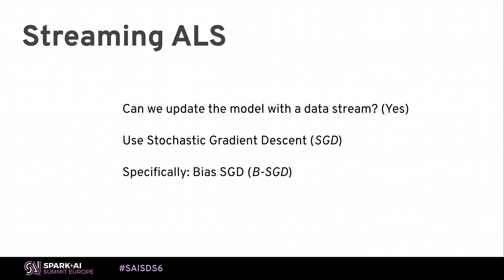You might think: if we can do this, why not use it with streaming data? We get a new rating and just recalculate the whole thing. Well, we could — but if you're a shop with hundreds of thousands of customers and lots of products, it becomes a bottleneck to perform this recalculation with every single rating. So it would be cool to update just a single latent factor row or column with a single rating. Fortunately, there is a way: we use stochastic gradient descent to factorize the matrix, specifically the bias stochastic gradient descent.